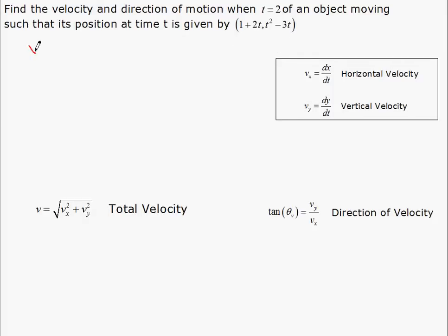So we know that x of t, the x position as a function of time, is equal to 1 plus 2t. And we know that the y position as a function of time is equal to t squared minus 3t. We want to know the velocity and direction of motion at time equals 2.